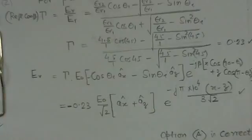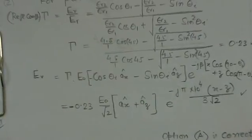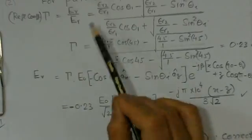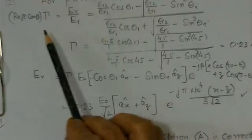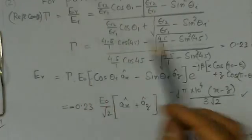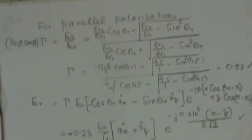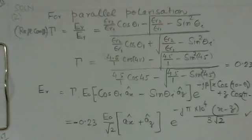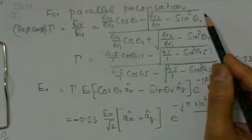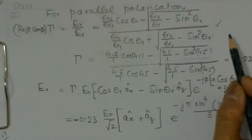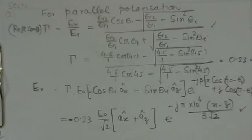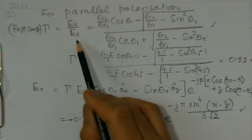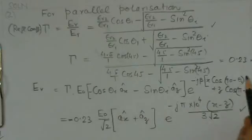Now we will see the other part, where we have to find the value for E_R. And for parallel polarization, the reflection coefficient value is given here. This is given in all the books and this has been taken as such. So we can find the value for Γ, the reflection coefficient, which comes out to be 0.23.